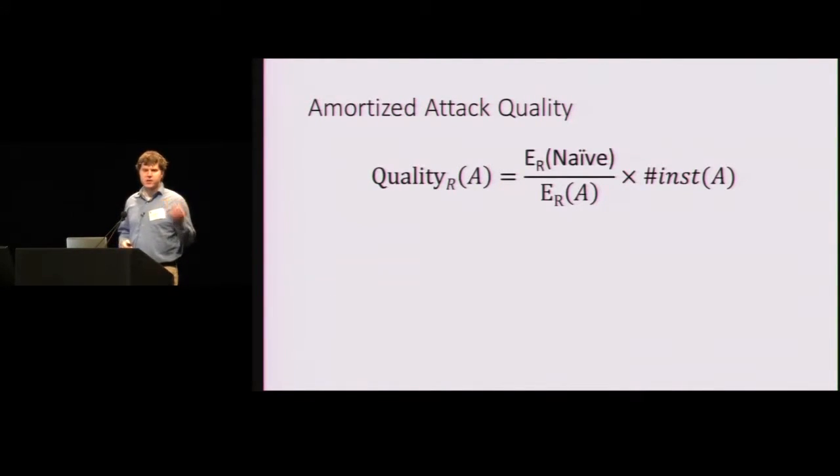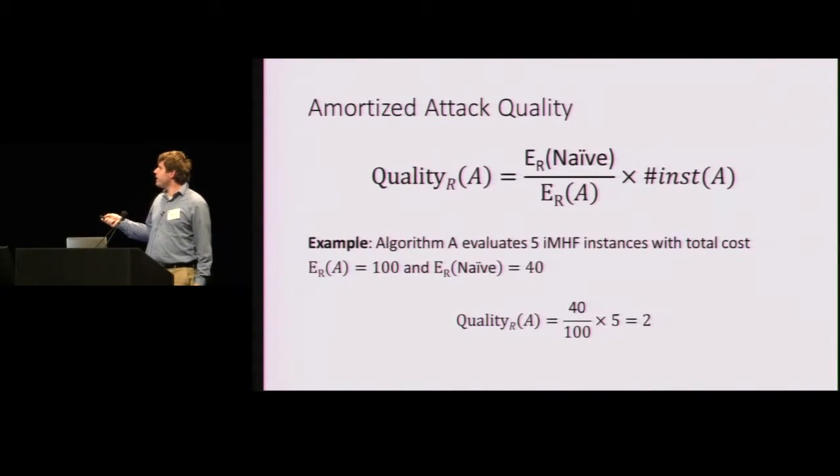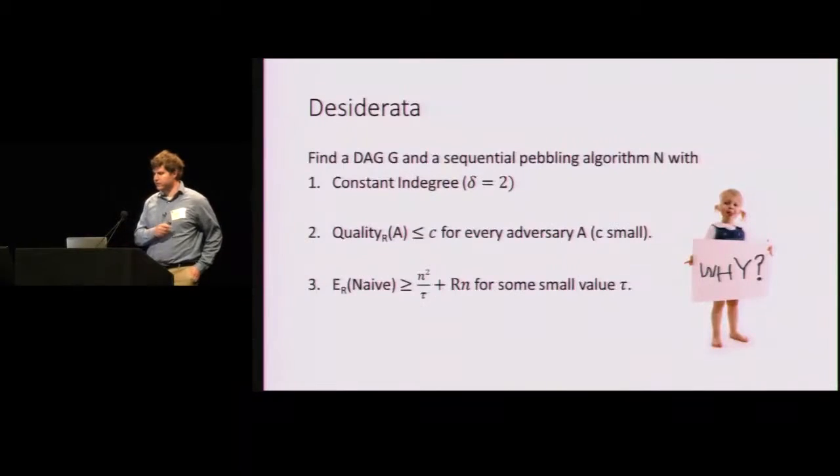All right. So what does it mean to have an attack on a data-independent memory hard function? Well, we call an algorithm an attack if the amortized complexity of computing this function is lower than the cost of the naive algorithm. So an example here, suppose algorithm A evaluates five IMHF instances with total cost 100, and suppose that the naive algorithm costs 40. Well, in this case, the quality of our attack is just 2.